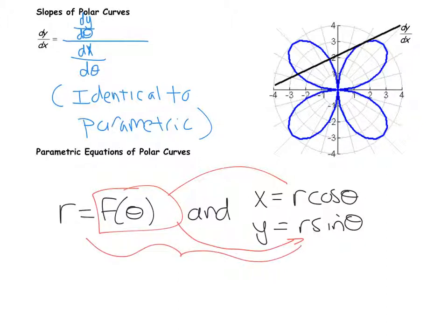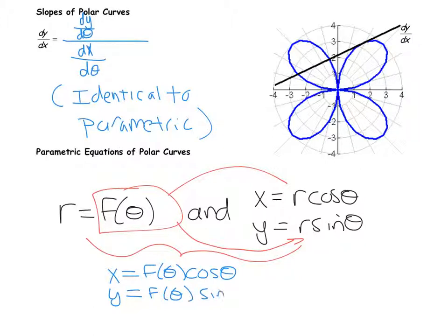This is probably the first time you've ever seen a parametric equation where the parameter is not t. Most of the time everyone says t is just time, but parametric parameters don't have to be just time. The t's aren't the only parameter you can use. This is a parametric equation now in terms of theta.